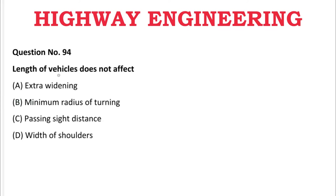Next question: The length of vehicle does not affect — A: extra widening, B: minimum radius of turning, C: passing sight distance, D: width of shoulders. The correct answer is D, width of shoulders.